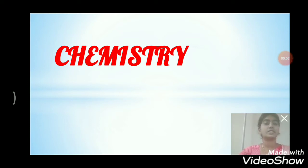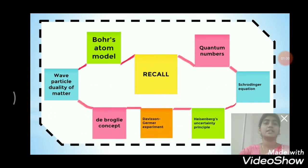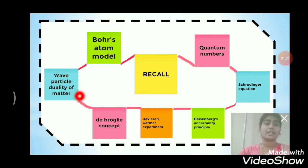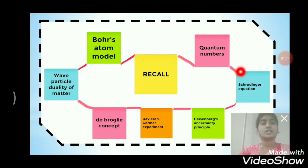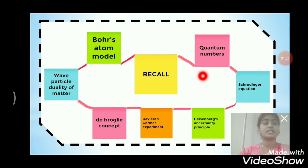Before we move on to today's topic, let's recap what we have learnt till now in this lesson. We have studied about the Bohr atom model, wave-particle duality of matter, de Broglie concept, Davisson and Germer experiment, Heisenberg uncertainty principle, Schrödinger equation, and quantum numbers. Today's topic is quite related to quantum numbers and the Schrödinger equation.